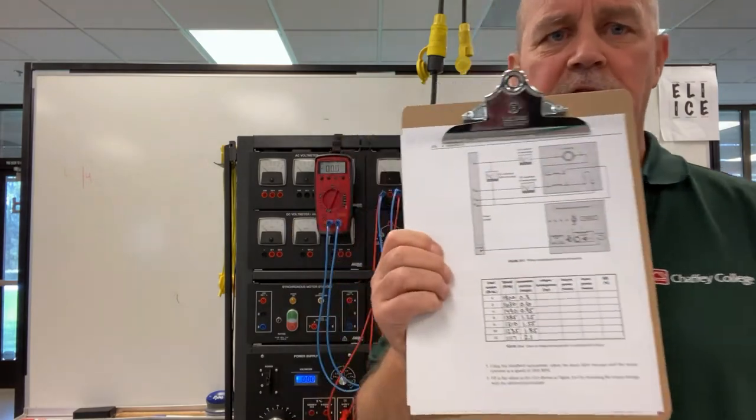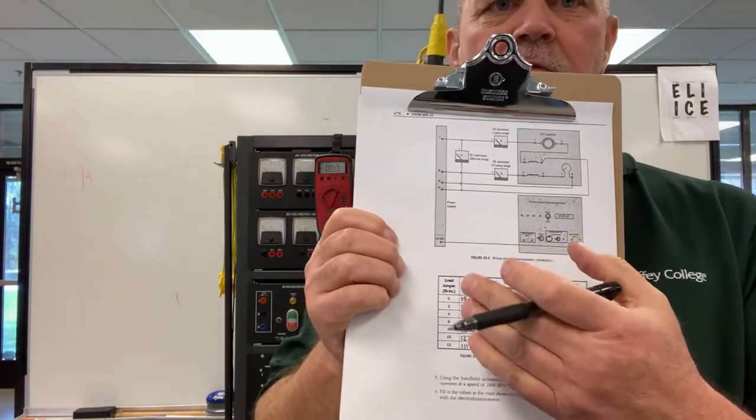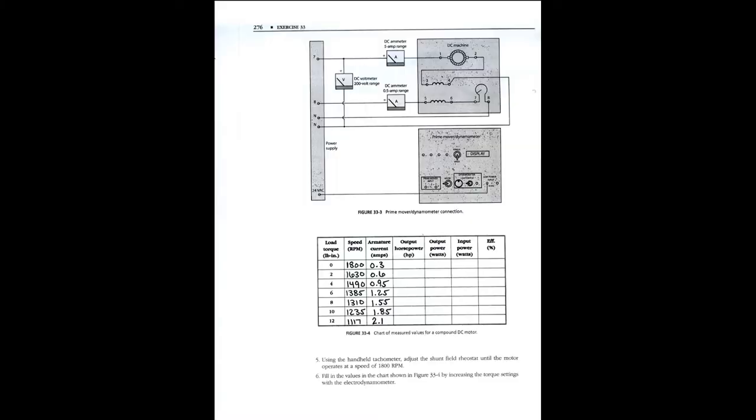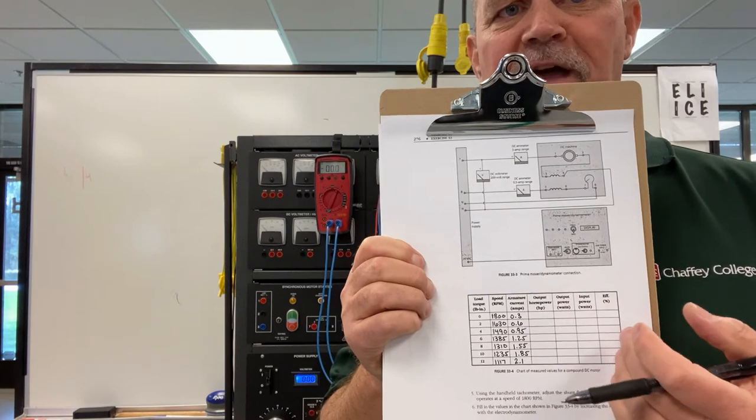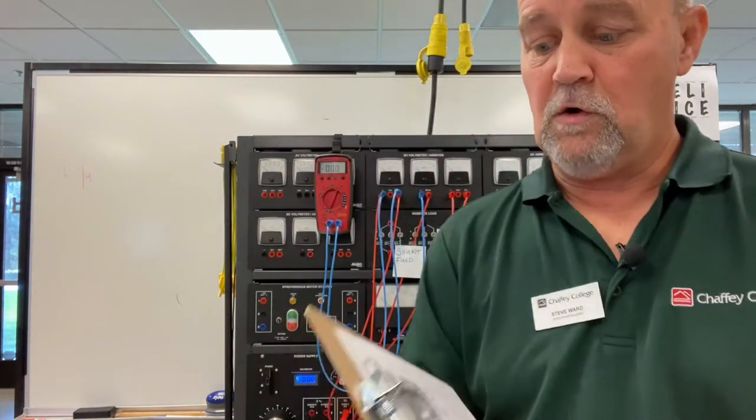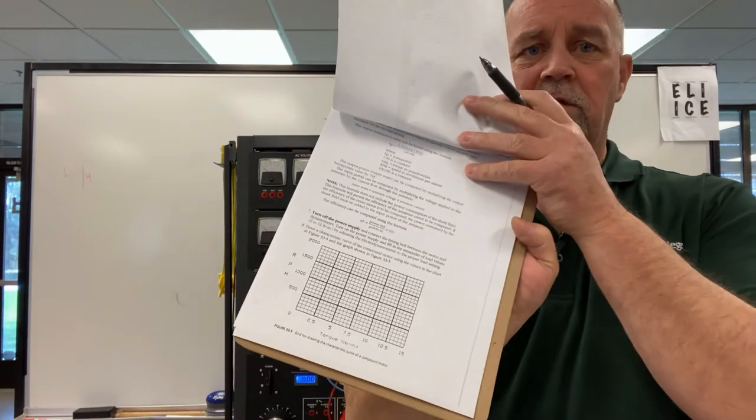All right. So, I've got the figures here on the chart for you. These first two columns. Of course, you need to do the math to figure out the rest of that. And ultimately, what these numbers are going to do is help you finish the graph on page 277.